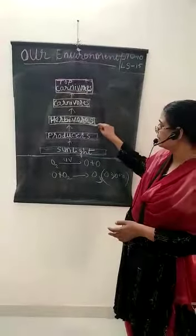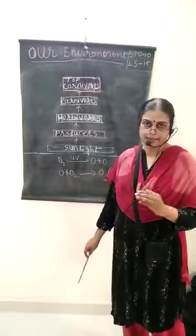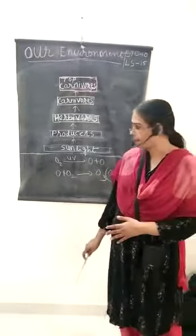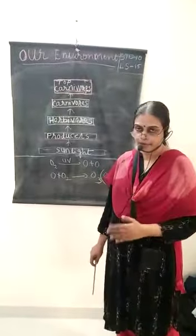Now we will discuss the harmful effects of ozone layer depletion. Now what is ozone? Ozone is 3 atoms of oxygen. It is an allotrope of oxygen.